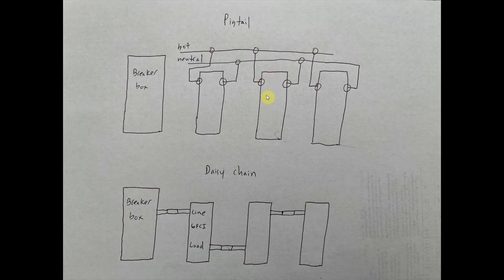That's one of the main differences between pigtails and daisy chains. In parallel, again, basically each outlet is being powered directly from the breaker box via the pigtails that were made in each box.